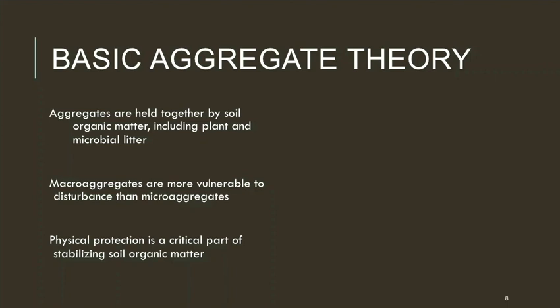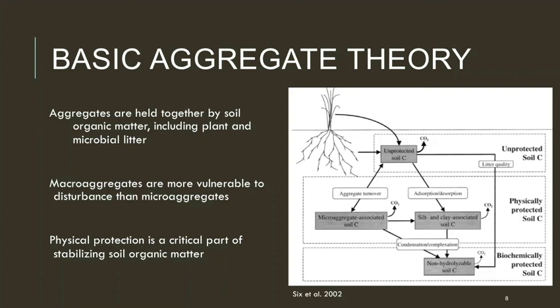The main takeaways are: first, organic matter is a critical part of stabilizing soil aggregates — as far as we know, it is the glue that makes soil aggregation happen. Second, macro aggregates are much more vulnerable to disturbance than micro aggregates; those big pieces of root hairs and fungal hyphae are much more likely to get broken up by tillage. Third, physical protection is a critical part of stabilizing soil organic matter. Even simple compounds like sugars and proteins can persist in the soil for a long time if they're physically protected.